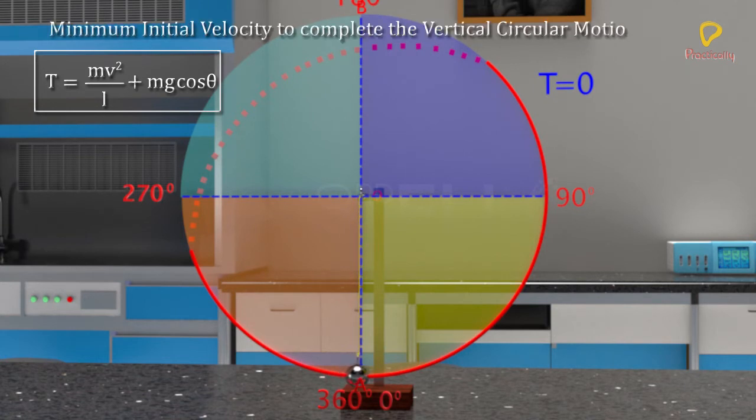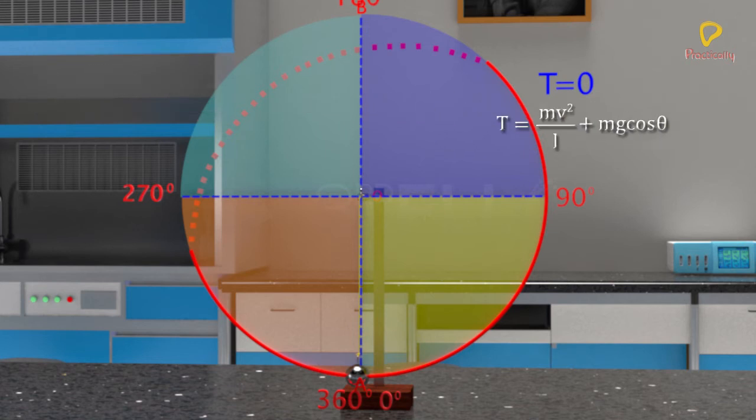Minimum initial velocity to complete the vertical circular motion. Consider the case where initial velocity of the bob is sufficient to complete the whole circle.